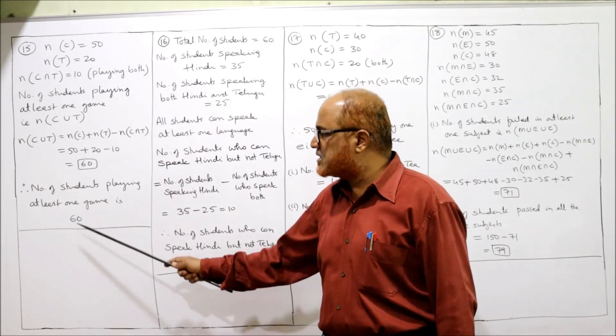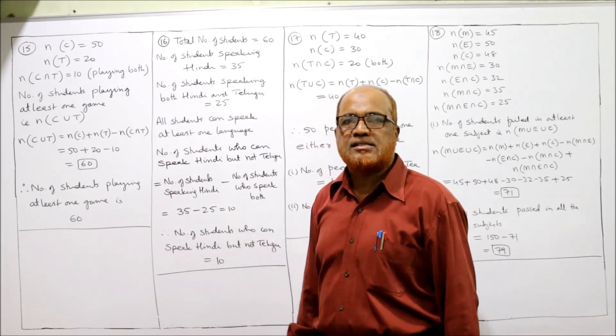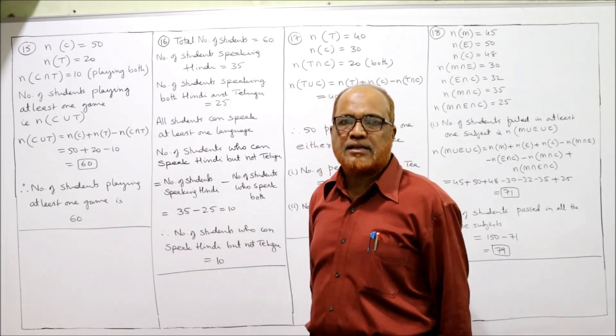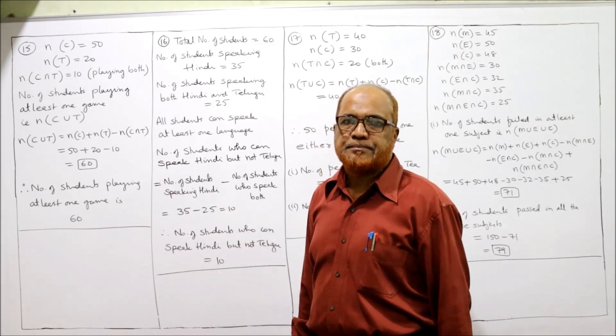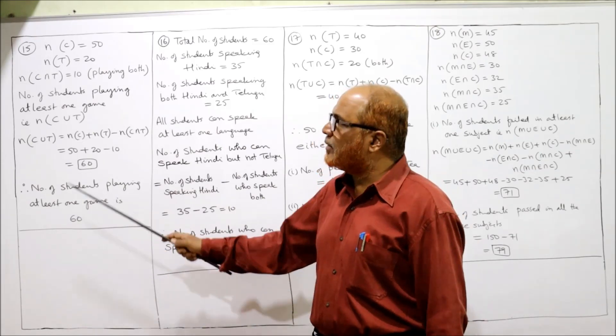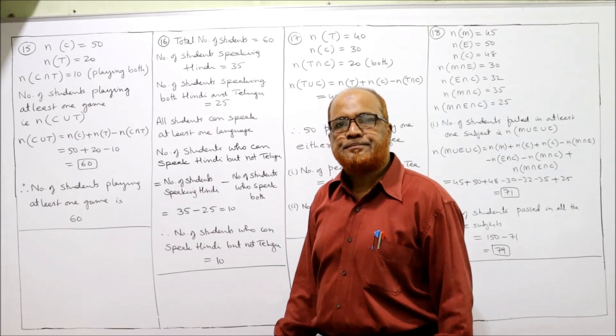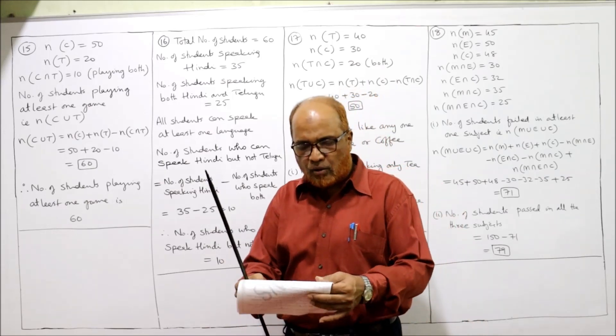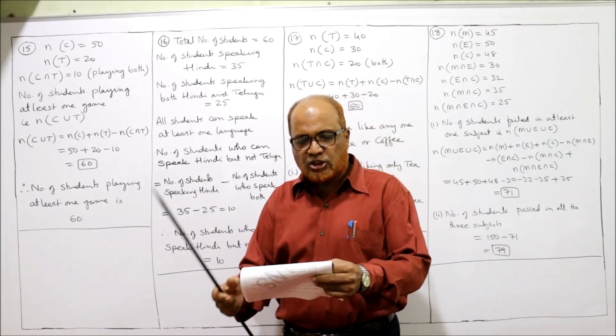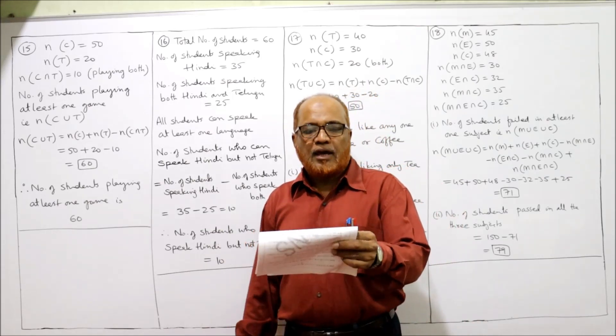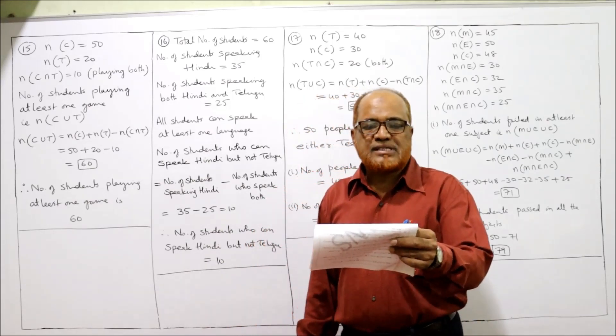So 50 plus 20 is 70, minus 10 gives 60. The number of students playing at least one game — either cricket or tennis — is 60. That's problem number 15.